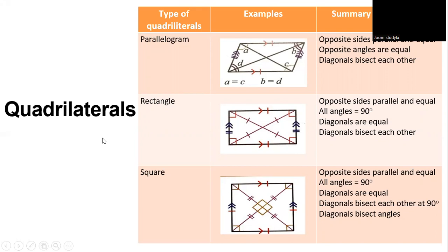Types of quadrilaterals. A parallelogram has opposite sides that are parallel and equal, opposite angles that are equal, and diagonals that bisect each other. In the diagram, A equals C and B equals D.